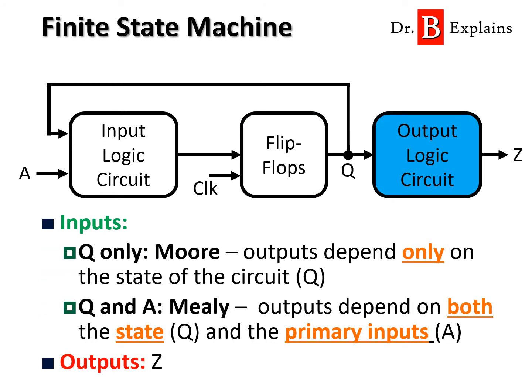The output or outputs of the FSM are given by another combinational circuit. The output logic circuit can receive as inputs Q and A. When only Q is used, the FSM is called Moore-type. In this case, the outputs of the finite state machine are dependent on the current state of the circuit only. When Q and also A — which are the primary inputs — are used, the finite state machine is called Mealy-type. In this case, the output of the FSM is dependent on the current state and also on the primary inputs.